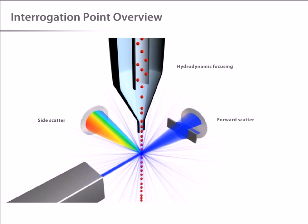The interrogation point is the heart of the system. This is where the laser and the sample intersect, and the optics collect the resulting scatter and fluorescence.